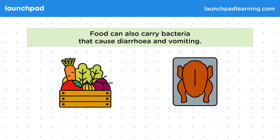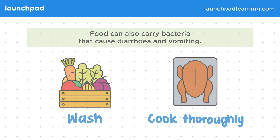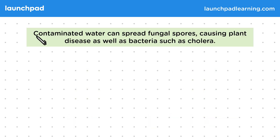Therefore, before eating them, fruit and vegetables need to be thoroughly washed, and meat needs to be cooked through thoroughly. Contaminated water can spread fungal spores, causing plant disease, as well as bacteria such as cholera.